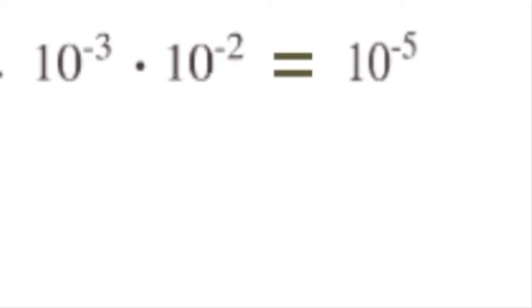A quicker way to do it would be to add their exponents: negative 3 plus negative 2 equals negative 5. So 10 to the power of negative 3 times 10 to the power of negative 2 equals 10 to the power of negative 5.